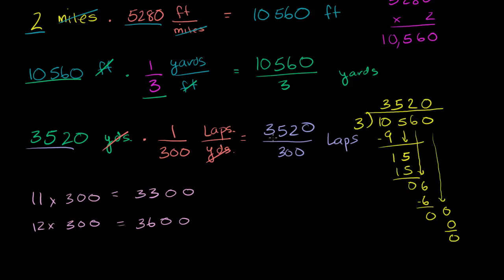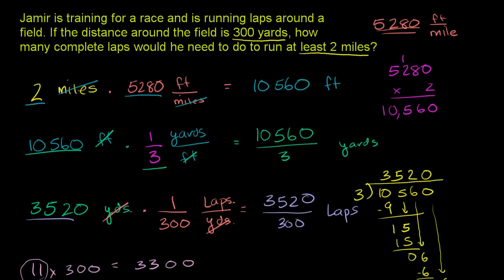So this is going to be 11 point something. It's larger than 11. 3,520 is larger than 3,300. So when you divide by 300, you're going to get something larger than 11, but this number right here is smaller than 3,600. So when you divide it by 300, you're going to get something a little bit smaller than 12. So the exact number of laps is going to be a little bit lower than 12 laps. So 2 miles is a little bit lower than 12 laps.